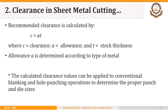The recommended clearance is calculated by the formula: c = a × t, where c is the clearance, a is the allowance, and t is the sheet thickness. The allowance a is determined according to the type of metal being cut. The calculated clearance values can be applied to conventional blanking and hole punching operations.